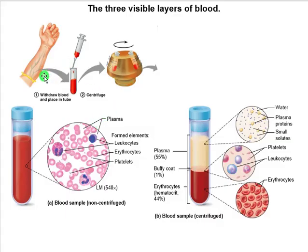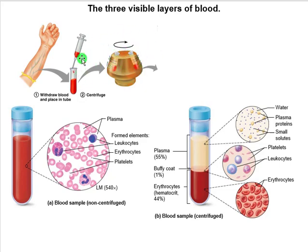Here's blood. If you look at a picture here, somebody has pulled blood out of this particular individual and then centrifuged it — put it in this fancy machine and spun it out. The reason that's done is because it helps separate out the different parts of blood, and that helps us conceptualize what those different parts are.